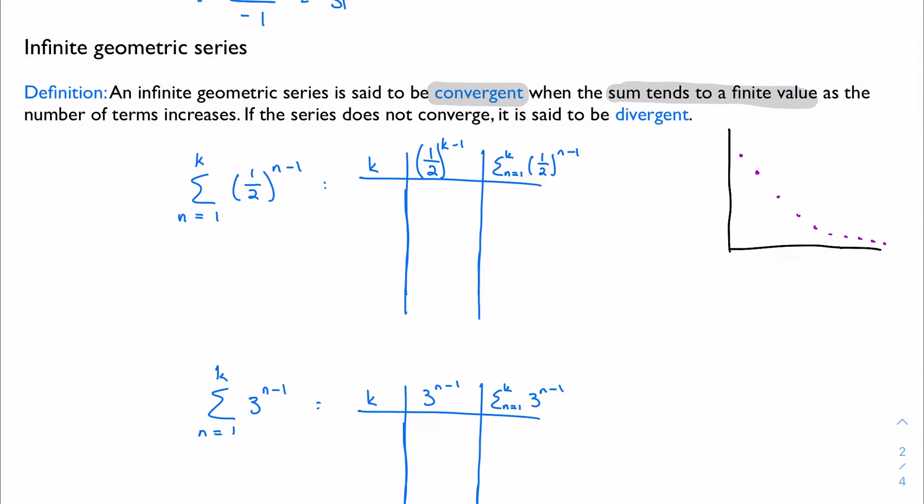If it does not converge, that is to say basically that it's going to approach either positive or negative infinity, usually, there are some cases where that's not necessarily true, it's said to be divergent.